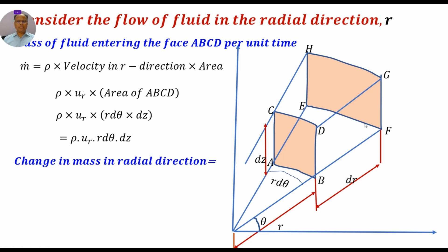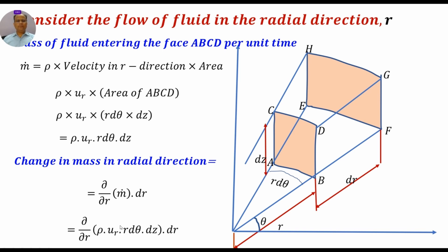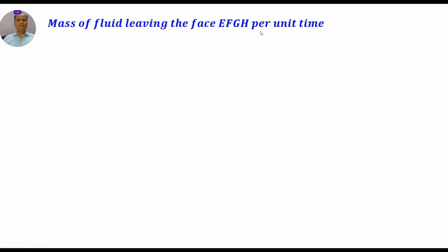Now we check how much the rate of mass changes in the r-direction. The change in mass in the radial direction is (∂/∂r)(ṁ)·dr, where ṁ is the mass in. Substituting: (∂/∂r)(ρ · ur · r·dθ · dz)·dr. The mass of fluid leaving face efgh per unit time is the quantity of mass in plus the change in mass in the radial direction.